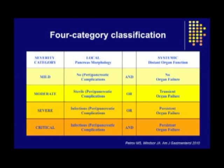This new classification also stresses the clinical importance of the interaction between local and systemic complications, with the highest mortality being attributed to the presence of both persistent organ failure and infectious pancreatic complications. To this end, we commend this new four-category classification of acute pancreatitis, because it reflects important and clinically relevant factors in individual patients.